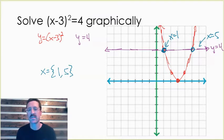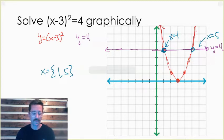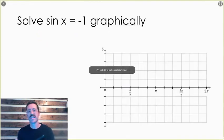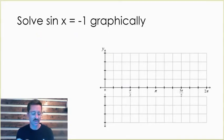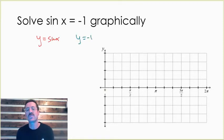Now that we have the baseline of how to solve equations with a graph, let's look at how to do trig equations with a graph. We're going to do this with a very simple trig equation: sine x equals negative one. We need a basic understanding of how to graph y equals sine x, and then we can graph y equals negative one and see where they intersect.